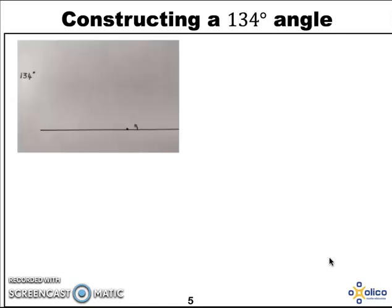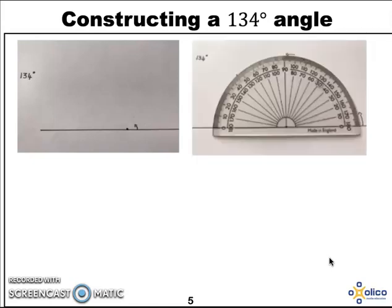We start off with the line and a point and we remember to go anti-clockwise around the point. We place our protractor carefully on the line with the middle of the protractor on the point and we work around to 134.